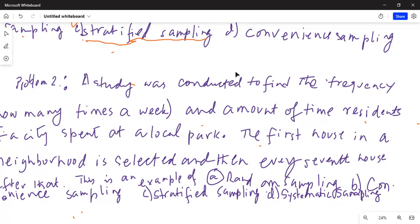A, random sampling. This is definitely not random. We are not randomly selecting the houses. B, convenience sampling. This is not convenience sampling because we are following a method. The method is the first house and then every seventh house after that.